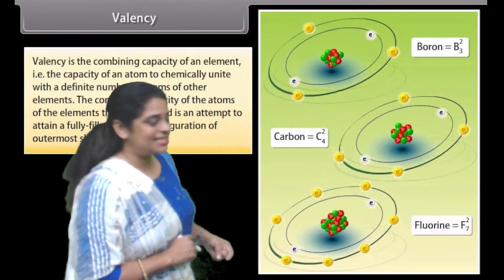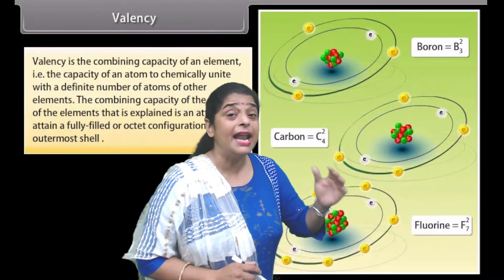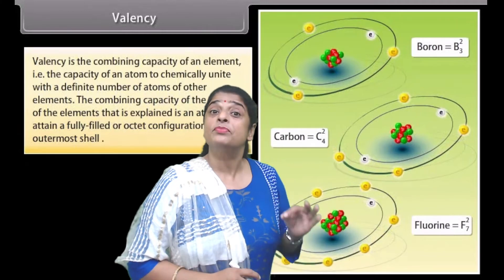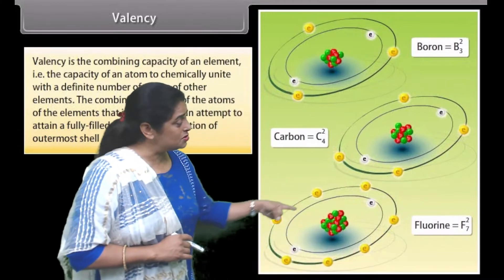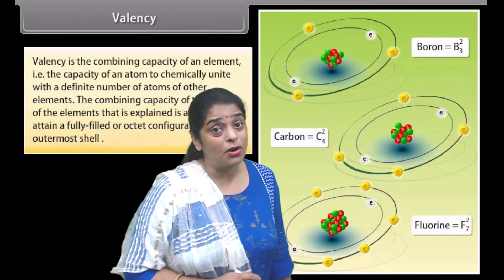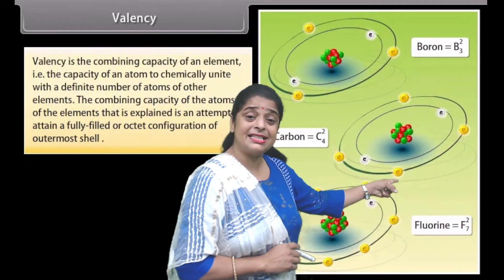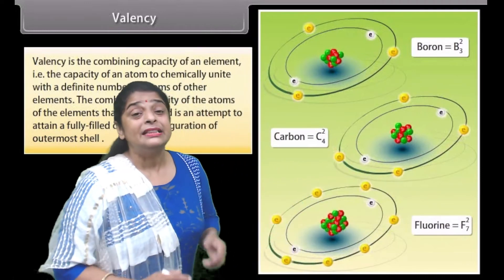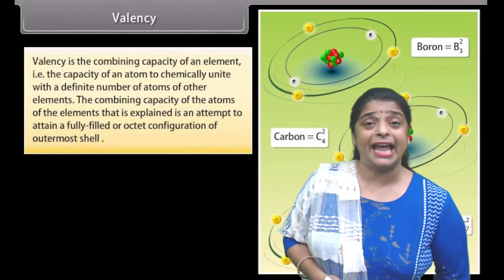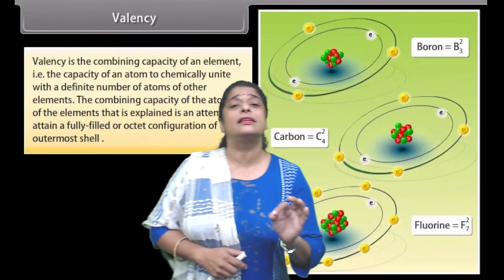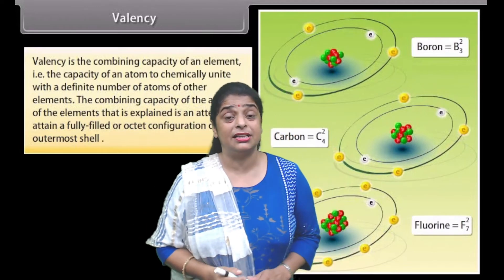Let's see the example of fluorine. Fluorine is an element having atomic number 9, so it has 9 electrons. The first shell will have 2 electrons. Fluorine is left with 7 more electrons to be filled in the second shell — that is, 1, 2, 3, 4, 5, 6, and 7 electrons in the second shell. This is how electrons are accommodated in the shells of an atom. Until the orbit is completely filled, no electron can be shifted to a higher energy level.